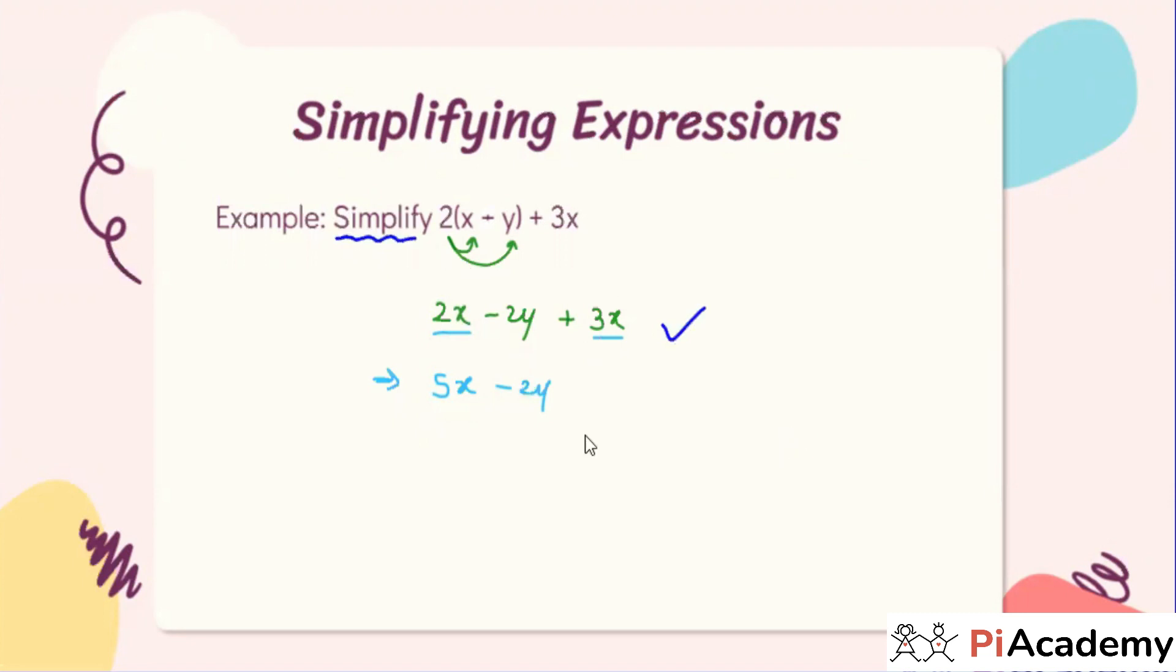Why? Because we have to simplify, and our motive is to simplify as much as we can. So here 2x and 3x, we are able to add them, right? If we are able, then you have to do it. We don't have any other option. Now let me check if anybody has a doubt. Koshal, what is your doubt?